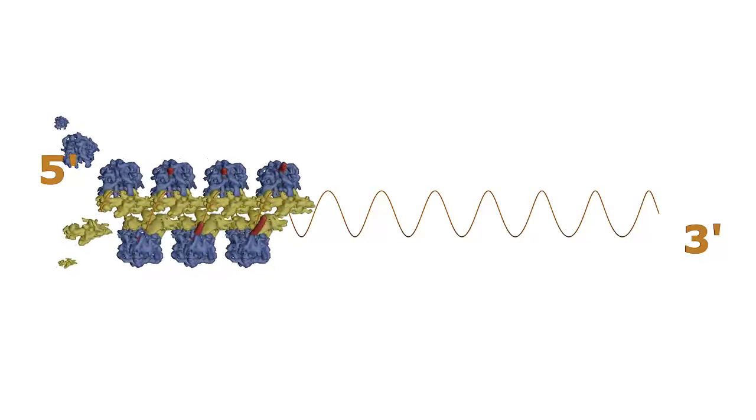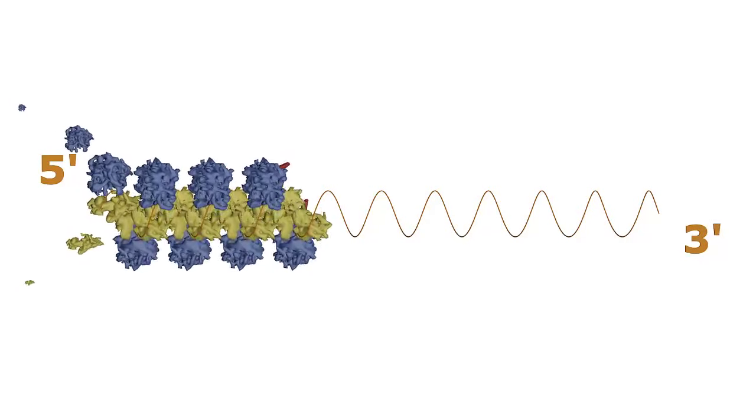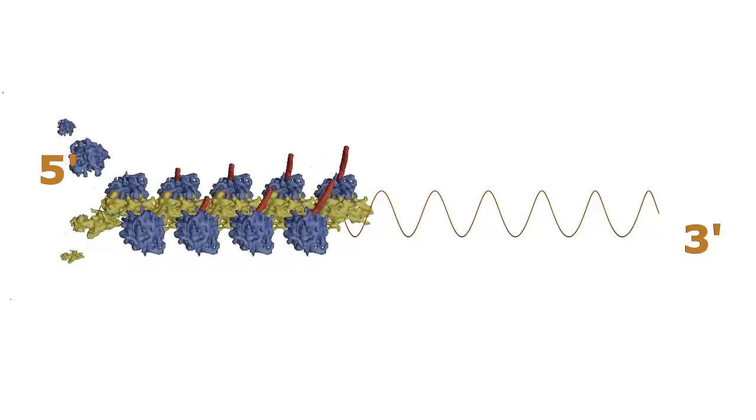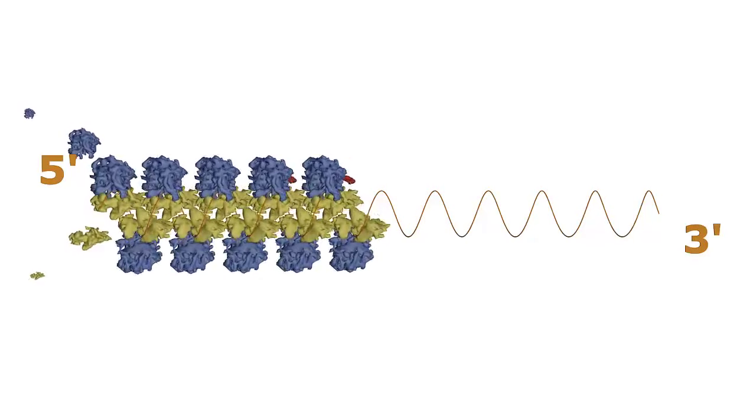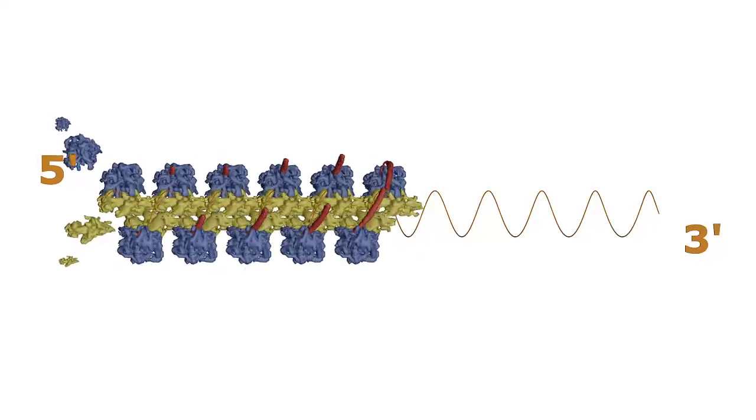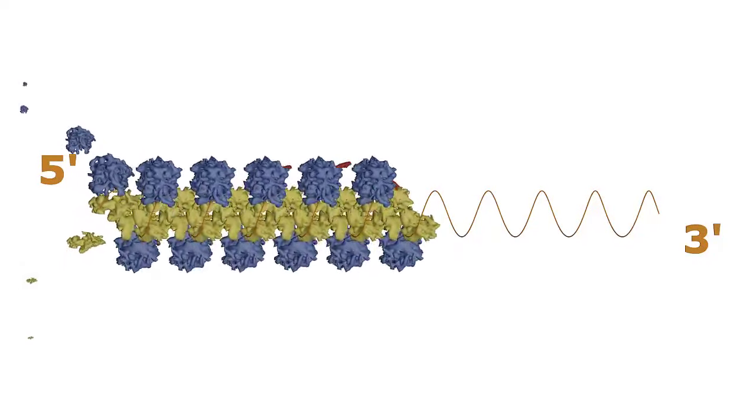Successive ribosomes attach and proceed along the mRNA. This arrangement of multiple ribosomes decorating an mRNA chain is called a polyribosome. Within a few seconds after protein synthesis begins, we can see the newly formed MVP chain emerge from the first ribosome.